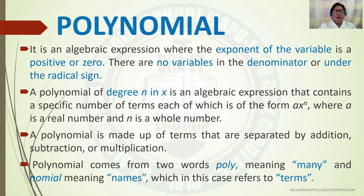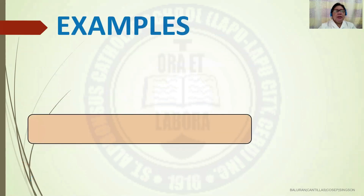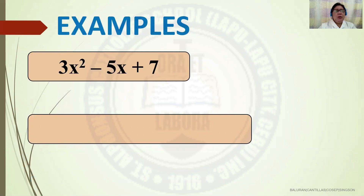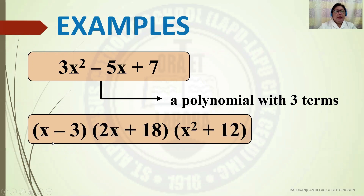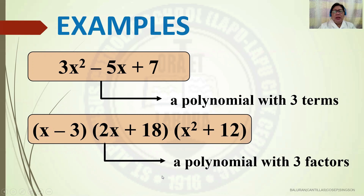Polynomial comes from the two words: poly meaning many, and nomial meaning names, which in this case refers to terms. Let us have examples. Given 3x squared minus 5x plus 7, this is a polynomial with three terms separated by a minus and a plus sign. Another example: the quantity of x minus 3, times 2x plus 18, times the quantity x squared plus 12. This is a polynomial with three factors.